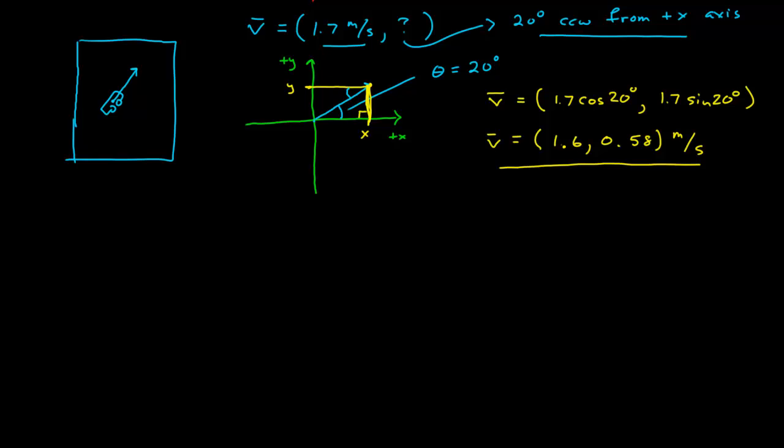Let's say I have a vector that's pointing over in this direction, and so I want to know what this vector is, its magnitude and direction, let's say it has a length of 5.2 meters per second.